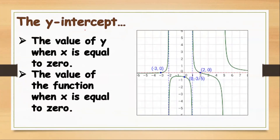What is the y-intercept? It is the value of y when x is equal to 0, or the value of the function when x is equal to 0. It is the point where the graph passes through or intersects the y-axis.